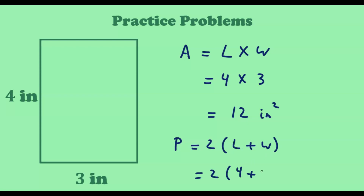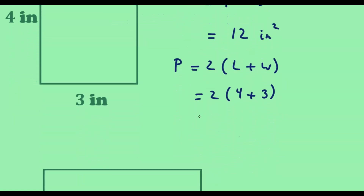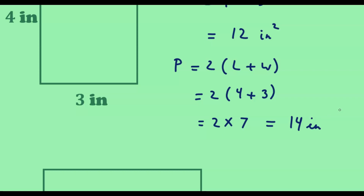The perimeter is 2 times l plus w: 2 times 4 plus 3 equals 2 times 7, which is 14 inches.